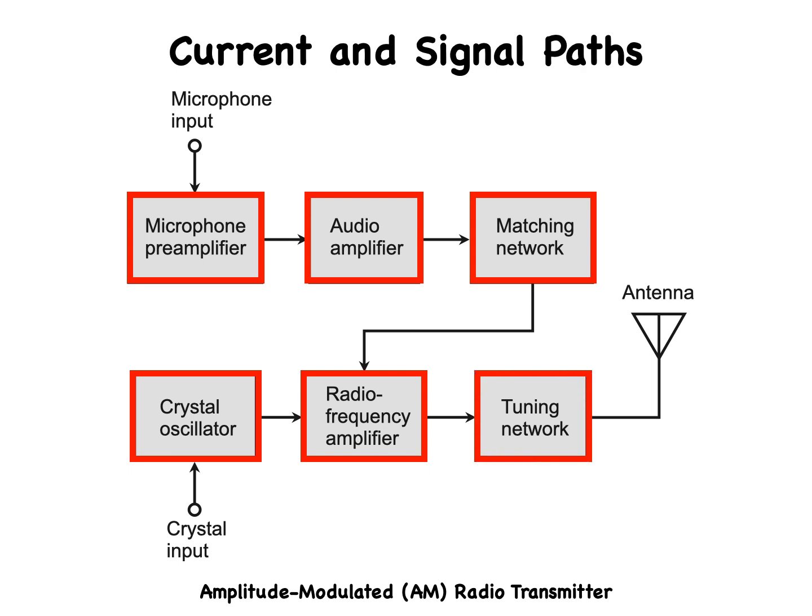Only one connection exists between the audio section of the circuit and the RF section, the one between the matching network and the RF amplifier. This block diagram, with its arrows, tells us not only how the components of the system connect to one another, but also the sequence of events or direction of signal flow.